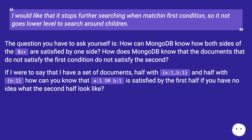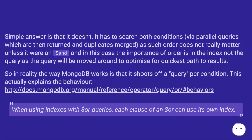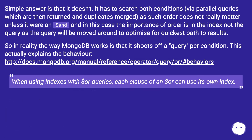If I have a set of documents — half with column B equal to one, and half with column B equal to two — how can you know that A column one or B column one is satisfied by the first half if you have no idea what the second half looks like? The simple answer is that it doesn't. It has to search both conditions via parallel queries, which are then returned and duplicates merged.